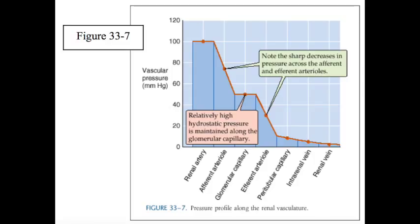However, physiological changes in the afferent and efferent arteriolar resistance usually do not keep overall arteriolar resistance constant. Thus, changes in arteriolar resistance generally lead to changes in glomerular plasma flow, which, as discussed earlier, can influence glomerular filtration rate independent of glomerular capillary hydrostatic pressure.